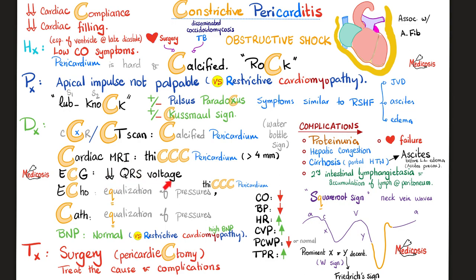On EKG, there is low QRS voltage because the calcified pericardium gets in the way between the electrode and the cardiac muscle. On echo or cardiac catheterization, I'll find equalization of pressures during diastole in all chambers. On neck veins there is the infamous square root sign, with prominent X descent and prominent Y descent. This prominent Y descent is called Friedrich's sign, and it will be absent or very diminished in cases of tamponade. Treatment is pericardiectomy.